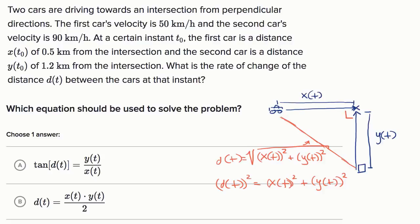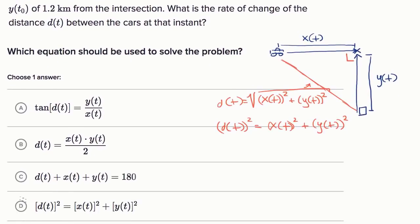And so if we look at these choices right over here, we indeed see that d sets up that exact same relationship that we just did ourselves. It shows that the distance squared between the cars is equal to that x distance from the intersection squared plus the y distance from the intersection squared. And then we can take the derivative of both sides to actually figure out this related rates question.